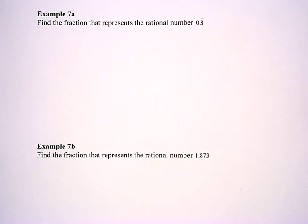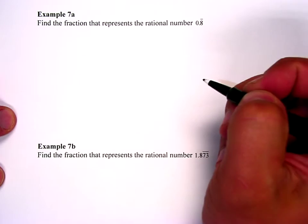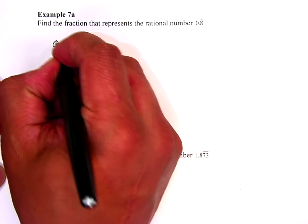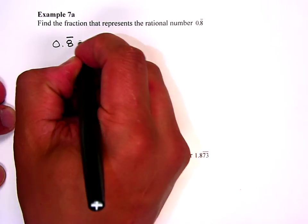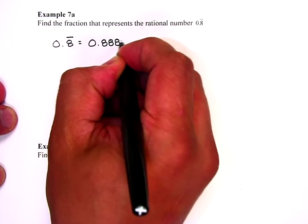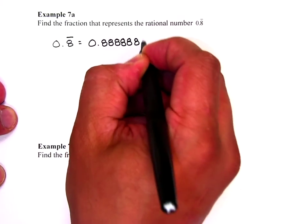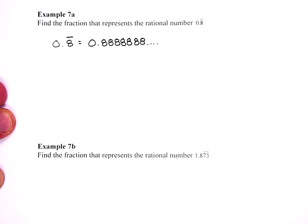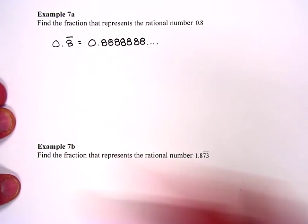Find the fraction that represents the rational number 0.8 repeating. Okay, this one is actually pretty easy because if you think about 0.8 repeating. How can you set this up?